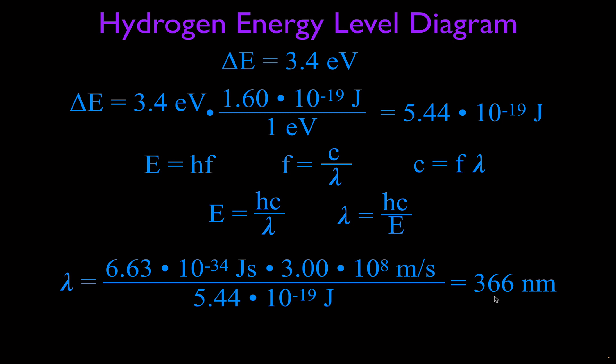So there you go. If you want to ionize hydrogen that's in its first excited state of n=2, you have to shine a photon on it, get it to absorb a photon of light that has a wavelength that's 366 nanometers.